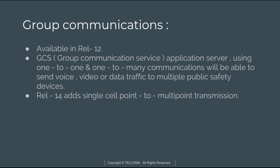The broadcast mode employs eMBMS — Enhanced Multimedia Broadcast Multicast Services — to use radio resources efficiently. However, if coverage is low, a unicast approach will deliver data more reliably. In good coverage we use eMBMS, whereas if coverage is not good we use the unicast approach. The system is able to dynamically switch between unicast and broadcast mode. This is the group communication feature of the public safety network.